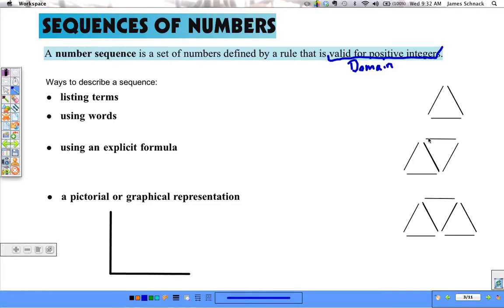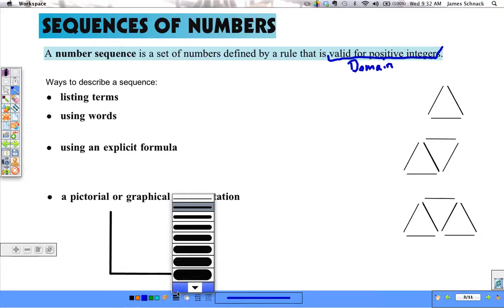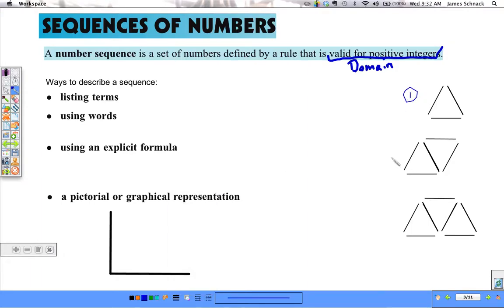So I have three figures over here. They're made up of toothpicks, if you will, or small sticks. Let's use a sequence to describe the number of small sticks it takes to make each one of these figures. So the first figure uses three small sticks: one, two, three. The next figure uses one, two, three, four, five.